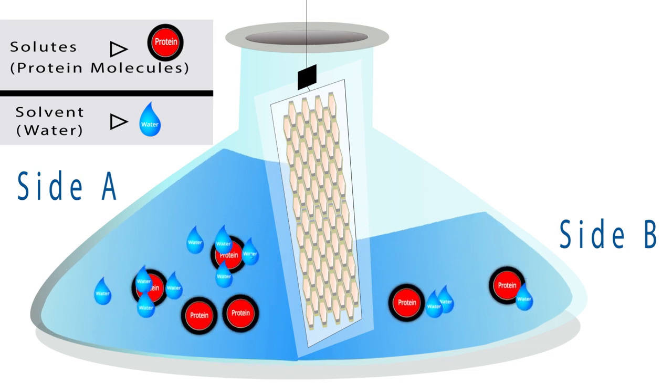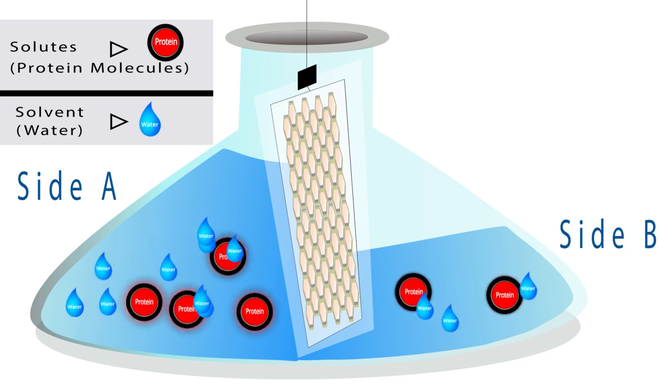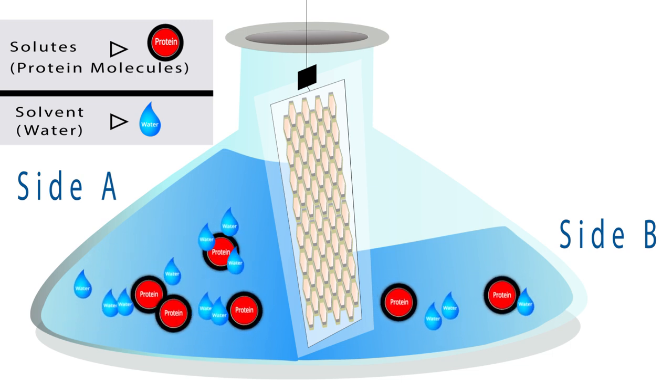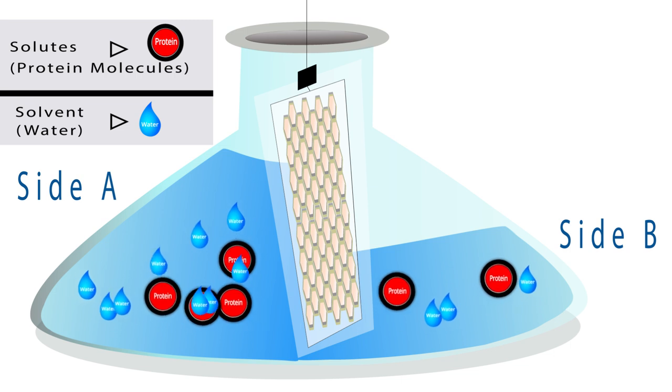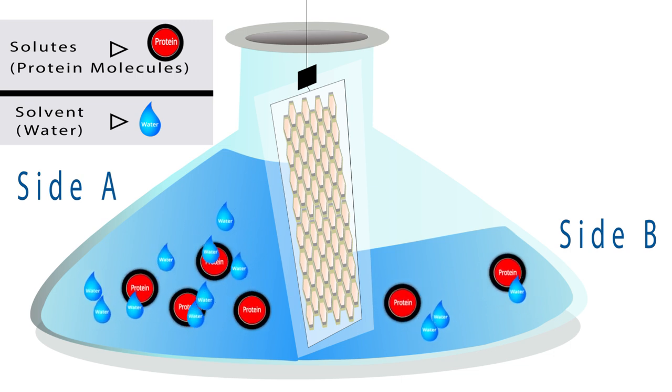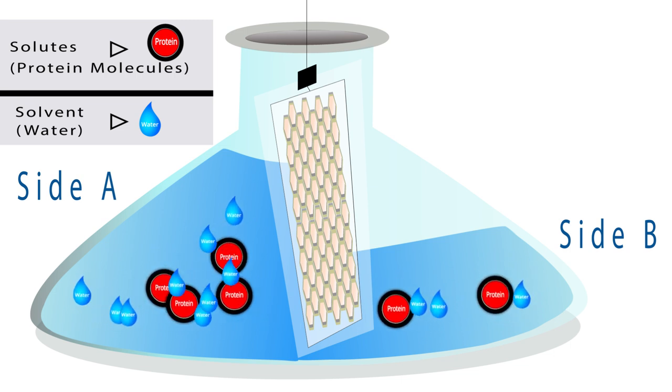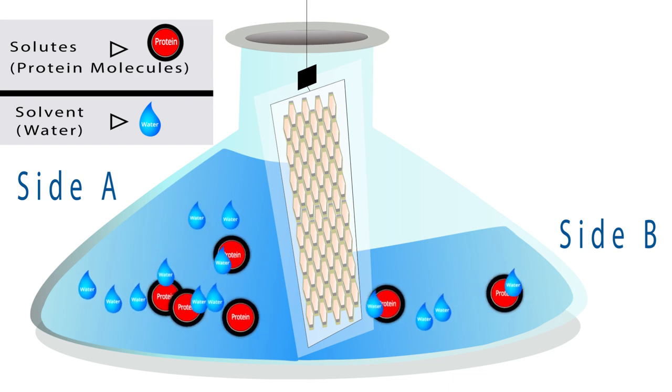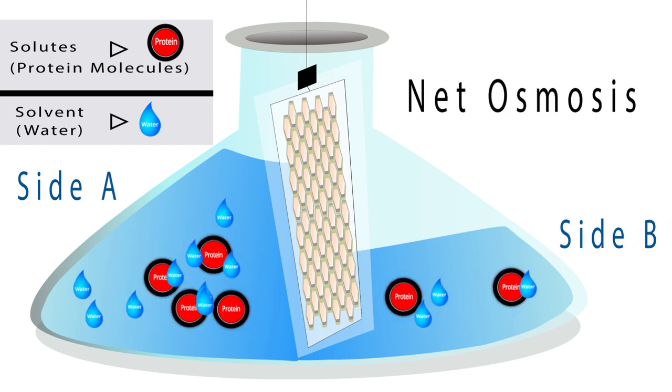Once equilibrium is reached, side A still has more protein molecules, so its volume actually goes up. Osmotic pressure moves the water molecules from side to side regardless of other solutes in the liquid. The final diffusion of water through the membrane from side B to side A is called net osmosis.